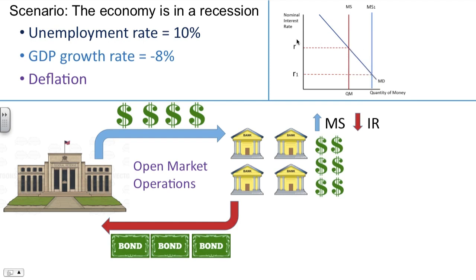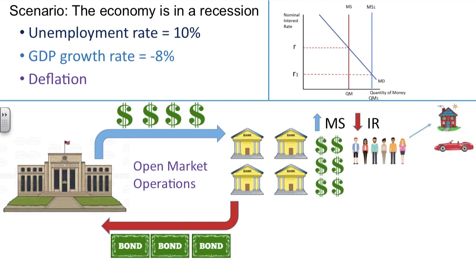Therefore, if interest rates are lower, people will demand more money in its liquid form as cash. What the Fed is actually hoping for is that with these low interest rates they will appeal to consumers that may be interested in borrowing money to buy, let's say, a house or maybe a big ticket item like a car.